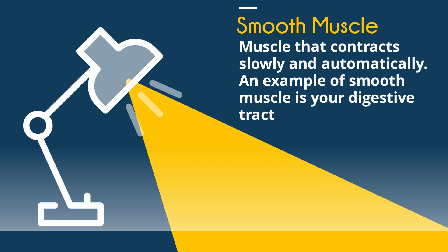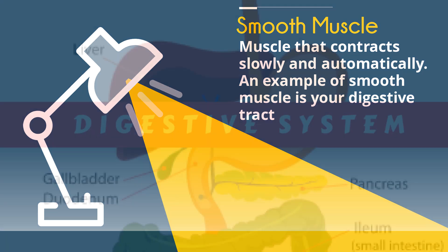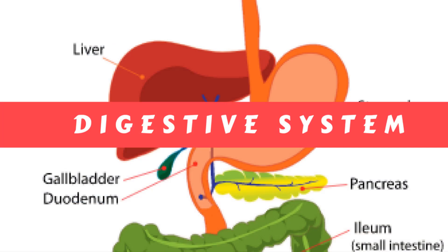Smooth muscle is muscle that contracts slowly and automatically. An example of smooth muscle is your digestive tract, which is composed of smooth muscle.